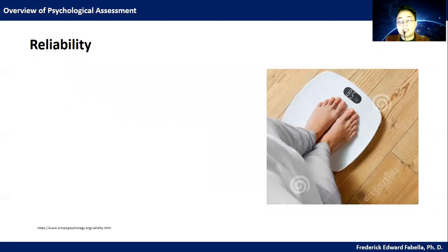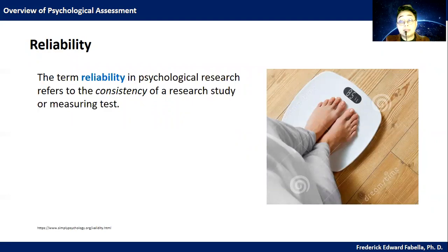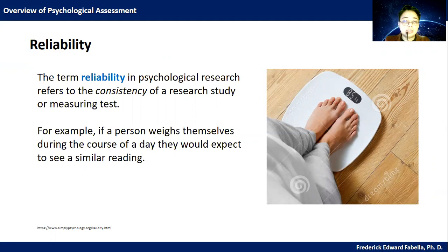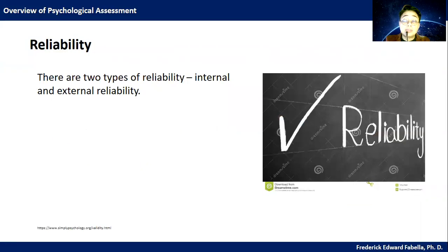Let's now go to reliability. The term reliability in psychological research refers to the consistency of a research study or measuring test. For example, if a person weighs themselves during the course of a day, you would expect to weigh the same throughout the day. If the scores are different — you weigh differently at different times of the day — will there be reliability? There are two types of reliability: internal and external. Internal reliability assesses the consistency of results across items within a test, while external reliability refers to the extent to which a measure varies from one use to another.